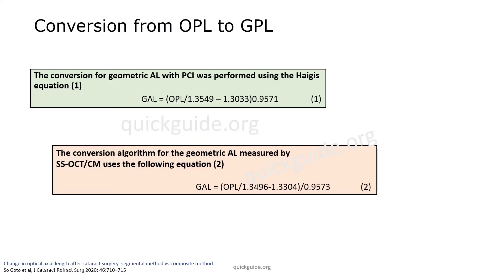These are the two equations used by IOL Master when it was first launched on partial coherence interferometry. The first equation was used by Haigis to convert the OPL into the geometric axial length. The swept-source OCT machine, the IOL Master 700, also has its own algorithm to convert from the OPL to the geometric axial length, given in equation number two.